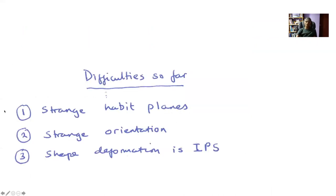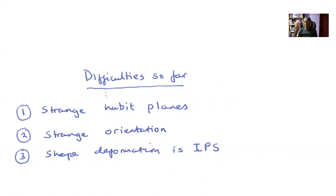Two of these difficulties I demonstrated to you and this is a difficulty that I foresaw. We observe strange irrational habit planes with odd indices close to 3, 10, 15, 259 and so forth. Why isn't it as simple as in slip where things happen on close-packed planes?